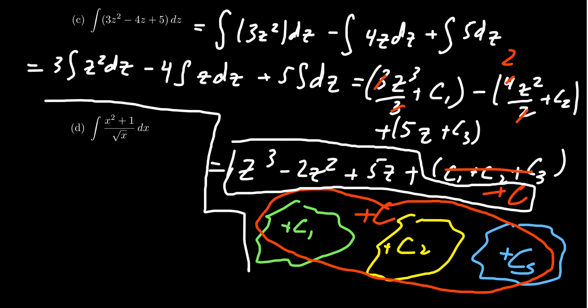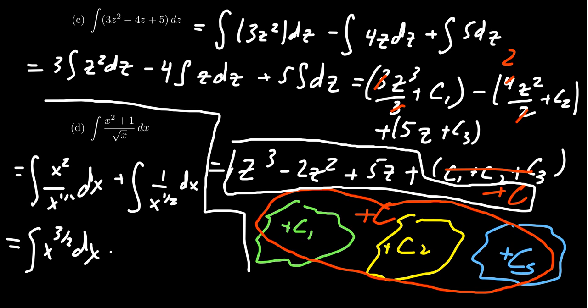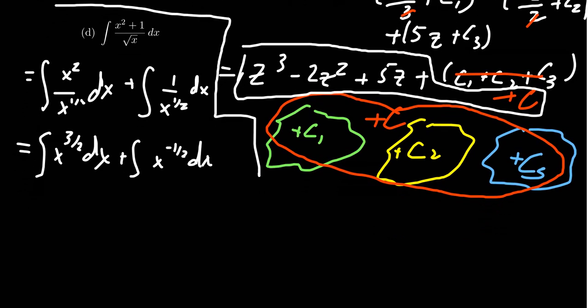And if we were to do that algebraically, what we can do is we can break it up as two fractions. We get X squared over X to the one half dX, and then we get plus the integral of one over X to the one half. Powers are always more preferable in calculus than radicals. So for the first one, X squared over X to the one half, if you subtract those powers, you will end up with X to the three halves power dX. And then this one over here is the integral of X to the negative one half power.